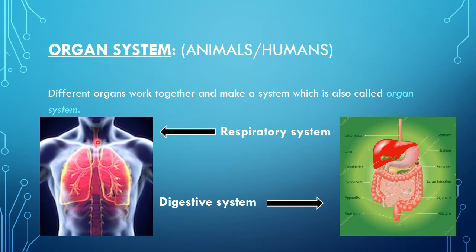In the respiratory system, different organs are present: the mouth, the wind pipe (also called trachea), and two lungs. The branch-like structures in the lungs are known as bronchi and bronchioles.